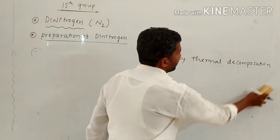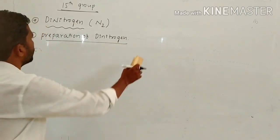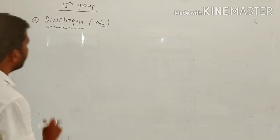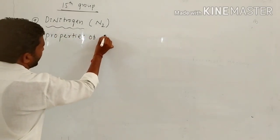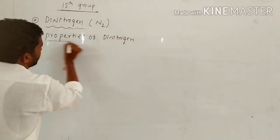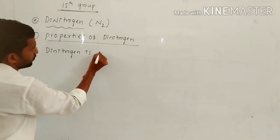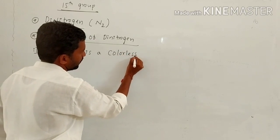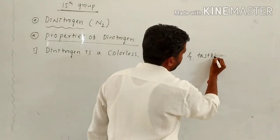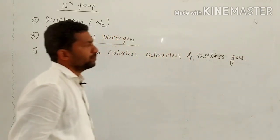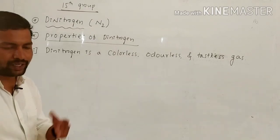Now we move to the properties of di-nitrogen. There are two types: physical properties and chemical properties. The first physical property is that di-nitrogen is colorless, odorless, and tasteless gas.